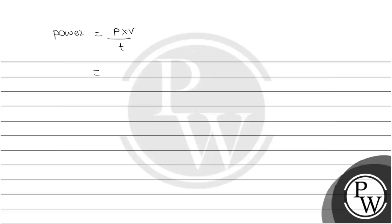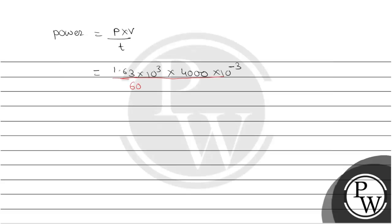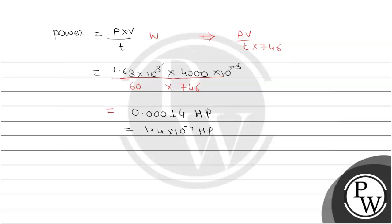Pressure is 1.63 into 10 raised to 3 Pascal. Volume is 4000 centimeter cube, converted to meter cube that is 4 into 10 raised to minus 3. Time is one minute equal to 60 seconds. To convert power to horsepower, divide by 746. The final answer is 0.00014, which equals 1.4 into 10 raised to minus 4 hp.